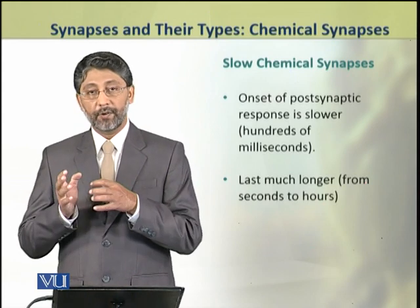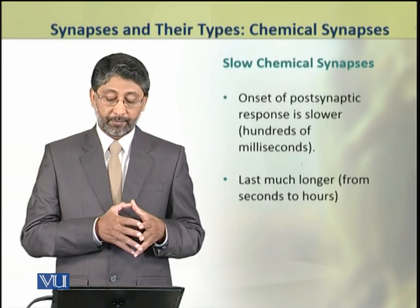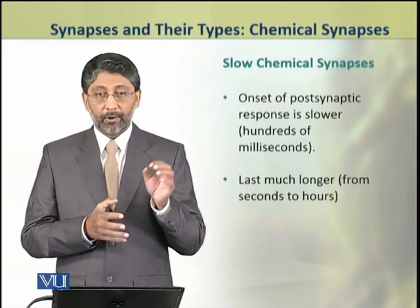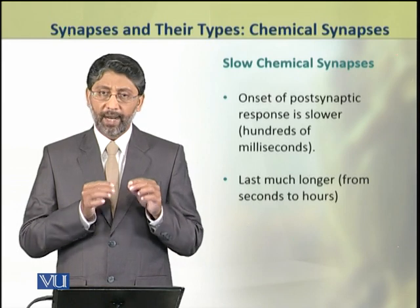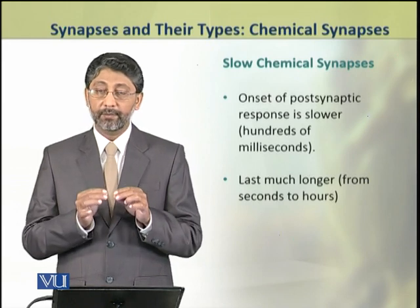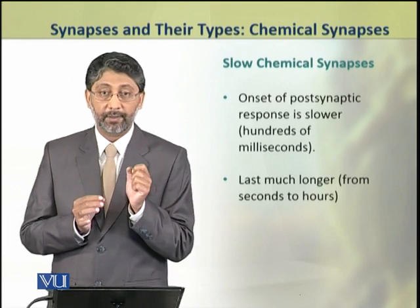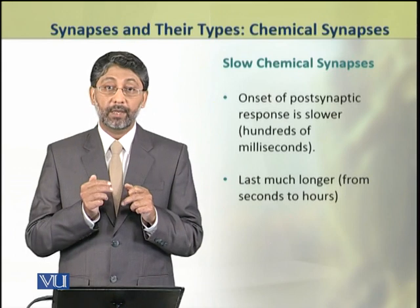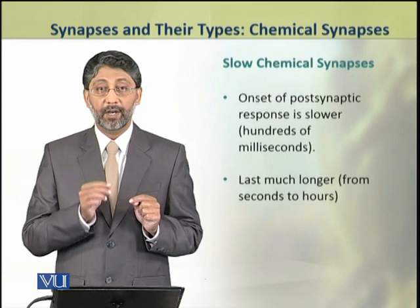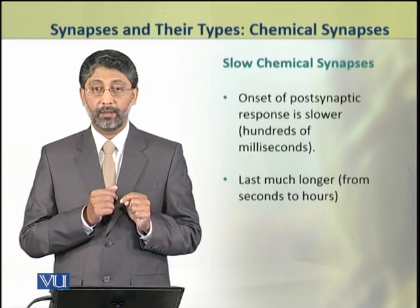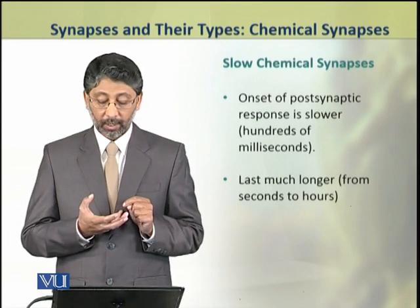In contrast to fast chemical synapses, slow chemical synapses produce a comparatively slower response that takes about hundreds of milliseconds to start. However, this response lasts much longer compared to responses generated by fast chemical transmitters — it may last for a few seconds up to hours.